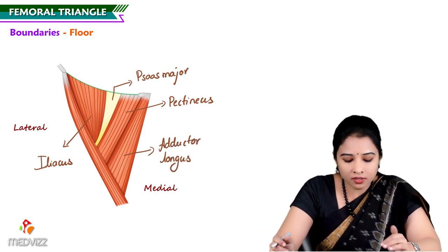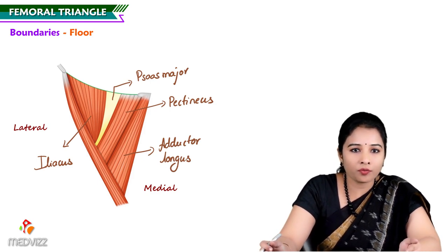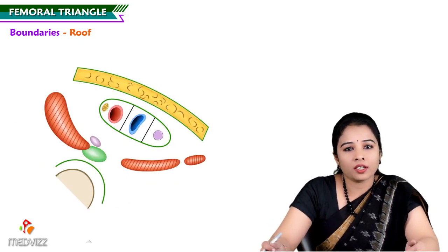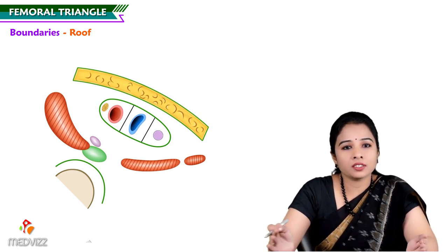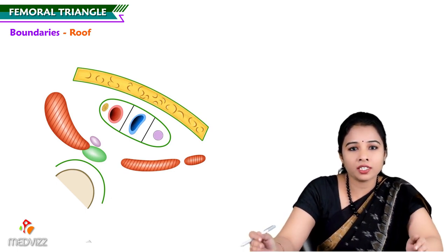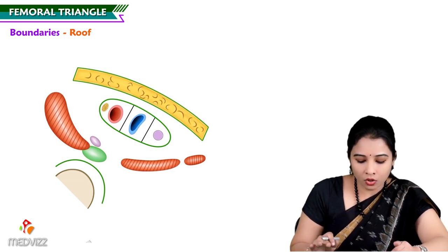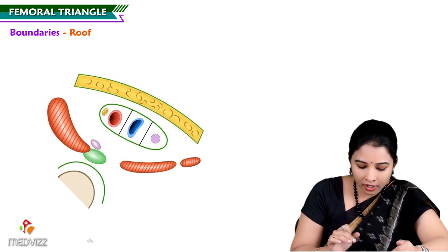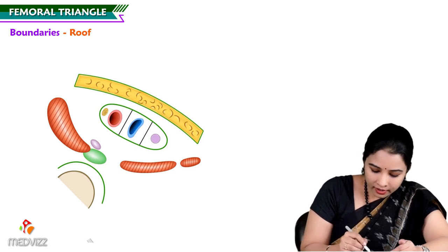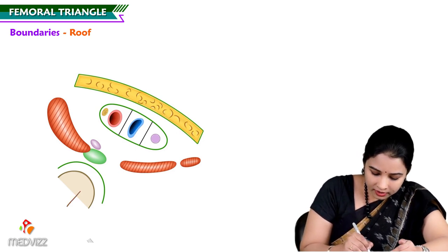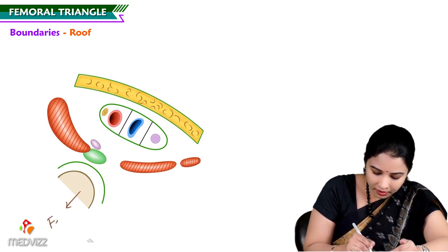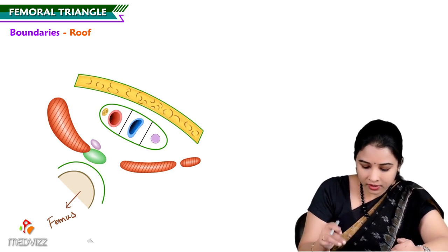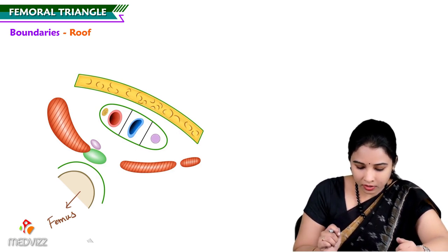These are the muscles forming the floor of the femoral triangle. The roof of the femoral triangle is covered by the skin, superficial fascia, and its contents. Here is a cross section along the femoral triangle, exposing the contents. On the other side we can see the femur, and the muscles present in the floor.